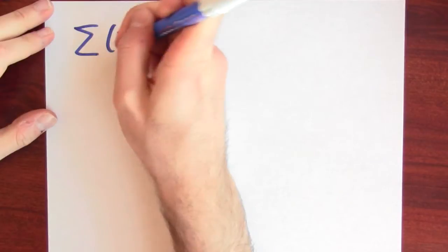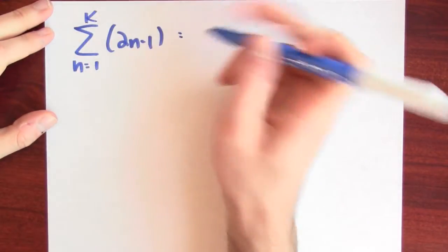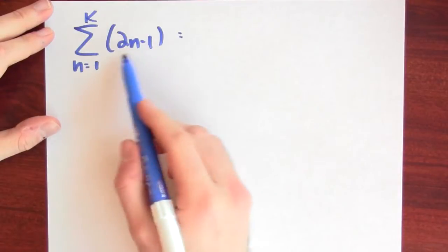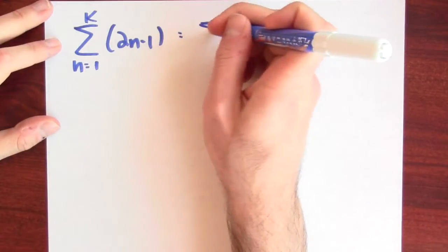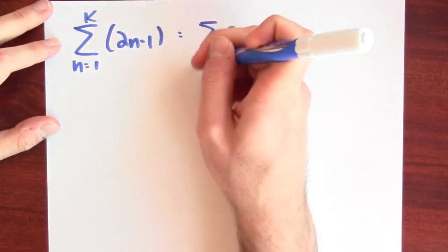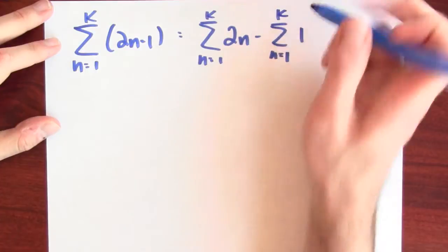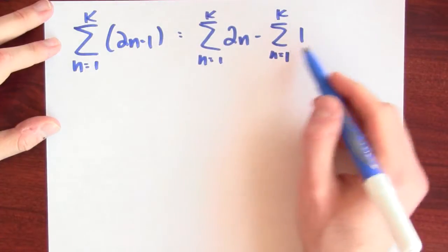Let's first work this out algebraically. So algebraically, I've got the sum of 2n minus 1 as n goes from 1 to k. And this is summing this difference, so I could write this as the difference of two sums. So both of these are sums as n goes from 1 to k, but now I'm adding up 2n and I'm just adding up 1.